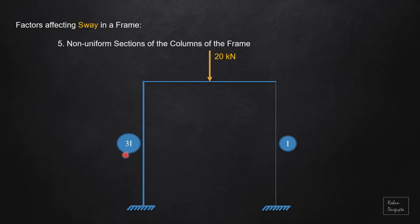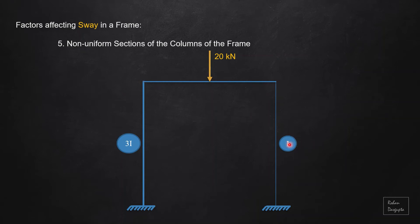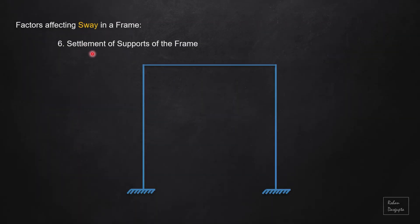Fifth, non-uniform sections of the columns of the frame. As you can see here, the column on the left has a moment of inertia of 3I and the column on the right has a moment of inertia of I — this will be a sway frame even if the geometry is symmetrical, the loading is symmetrical, and the supports are the same. Importantly, it does not matter if the section of the beam is uniform or non-uniform. If this column is I, this column is I, and the beam is 2I, it is still a non-sway frame. Only when the columns have non-uniform sections will it be a sway frame.